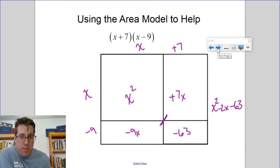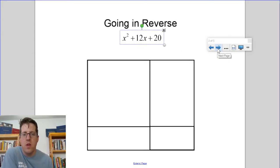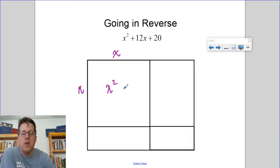We're going to try the same thing, but we're going to try it in reverse. So to go in reverse, if I give you x squared plus 12x plus 20, you can say, okay, the x squared would have come from x times x.